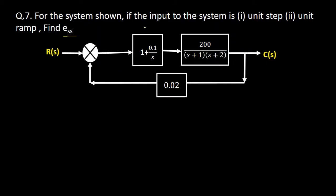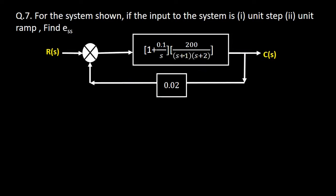In the block diagram, this is the G1 gain, this is the G2 gain, and the feedback part transfer function H(s) is equal to 0.02. When two blocks are in cascade, the resultant gain is the multiplication of the individual gains, so the total gain G(s) equals G1 into G2. This block diagram will be converted after multiplication of G1 and G2, giving us the forward path transfer function G(s) and feedback transfer function H(s).